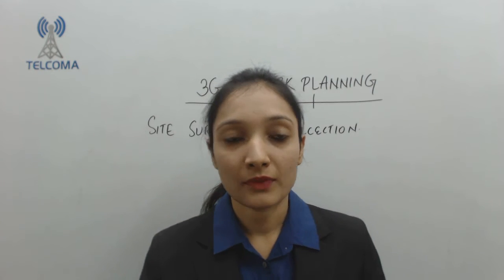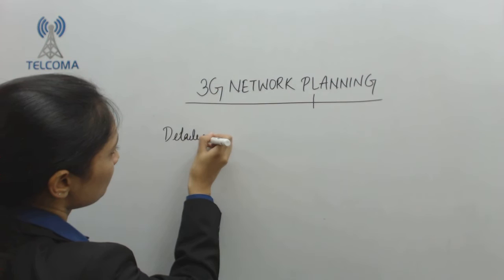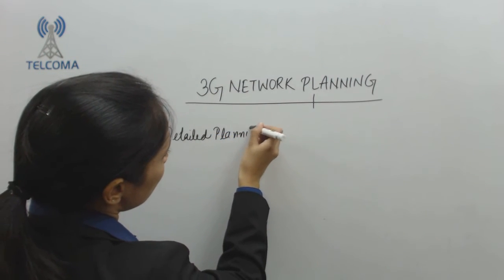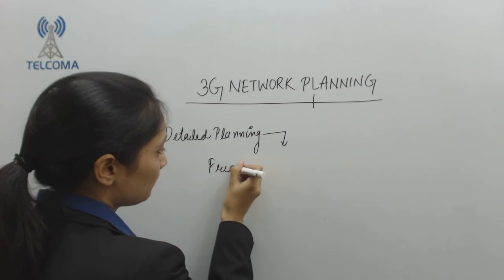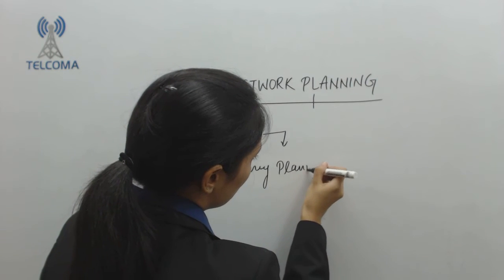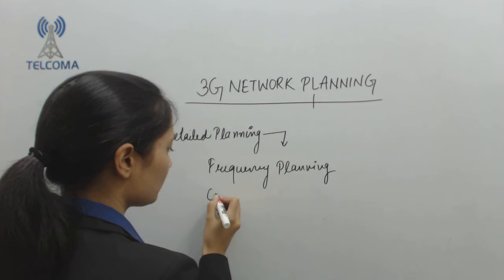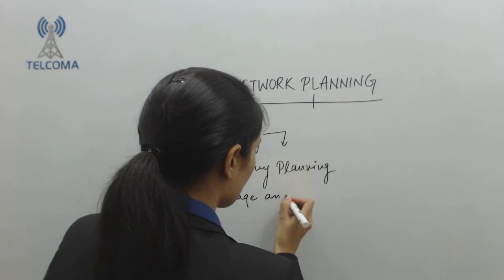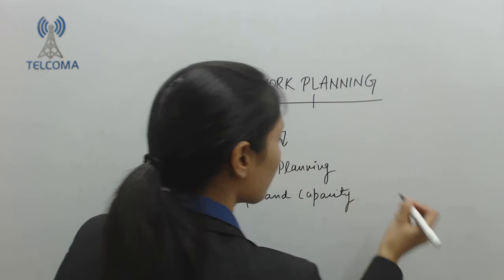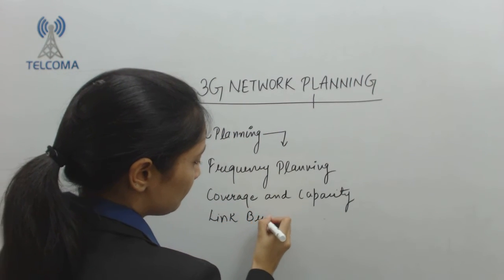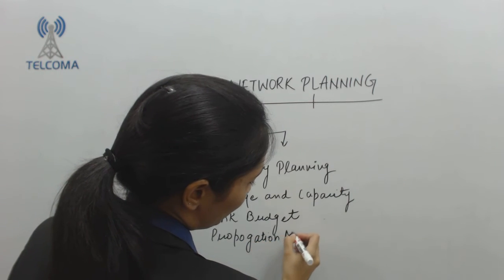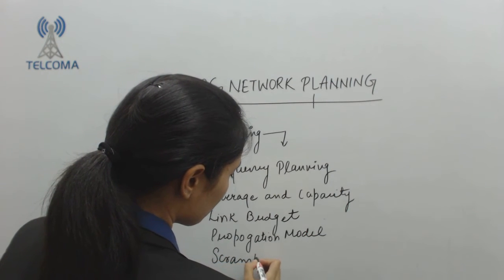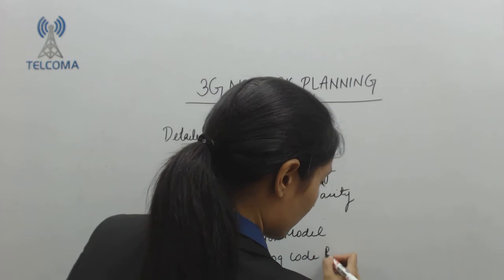Moving towards detailed planning concepts, there are a number of issues which need to be addressed when planning a network: frequency planning, coverage and capacity planning, link budget, propagation model, scrambling, and code planning — which is a very important issue specific to 3G networks.